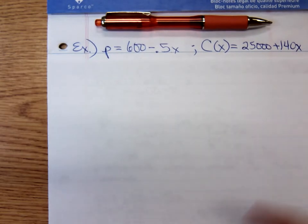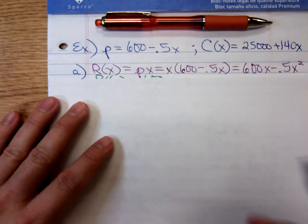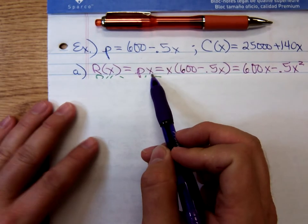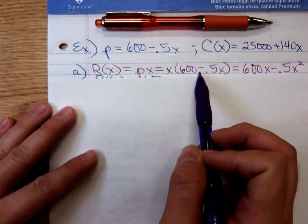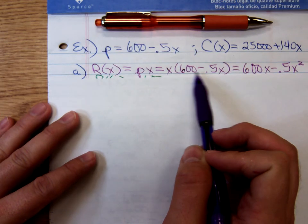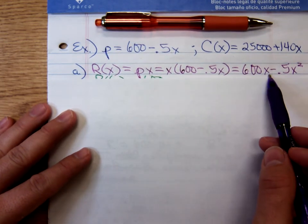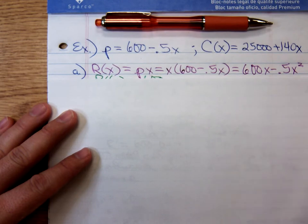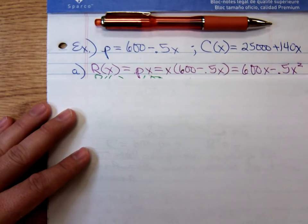And so, revenue, we know revenue is equal to price times quantity. The price is 600 minus 0.5X times quantity. So that gave us a very nice revenue function of 600X minus 0.5X squared.